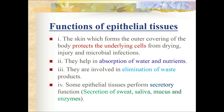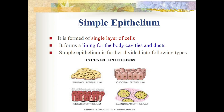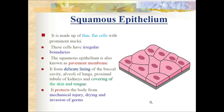Secretion of sweat, saliva, mucus, and enzymes are examples. Simple epithelium is formed of a single layer of cells and forms a lining for body cavities and the lumen of ducts. Simple epithelium is further divided into: squamous epithelium, cuboidal epithelium, ciliated epithelium, and glandular epithelium.